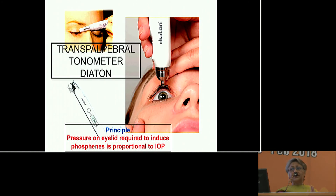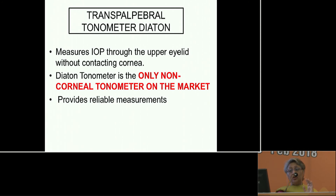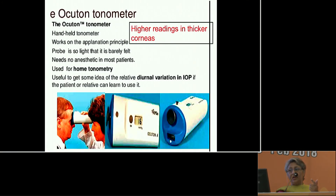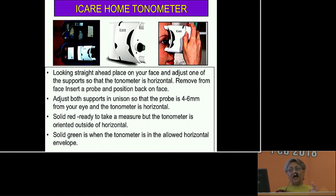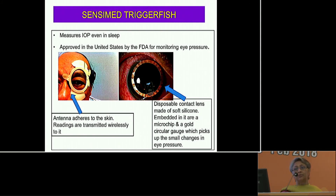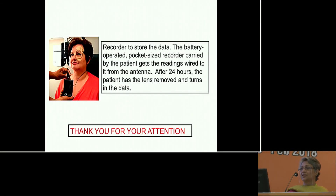There are home tonometers available. The Diaton is the only transpalpebral non-corneal tonometer on the market, though it is difficult to obtain. The E-Occutone tonometer and the iCare home tonometer are also available and used comfortably with patients, especially for those showing progression, to monitor what happens over time. Everyone has heard about the Sensimed Triggerfish contact lens sensor; it is expensive and it is not always clear how to correlate the volume changes in the aqueous with IOP.